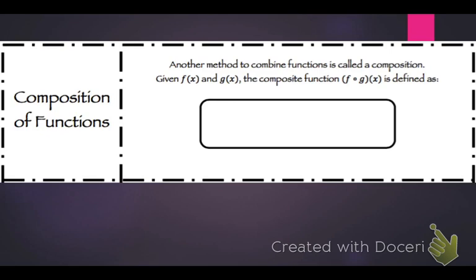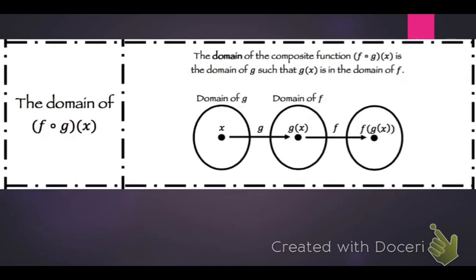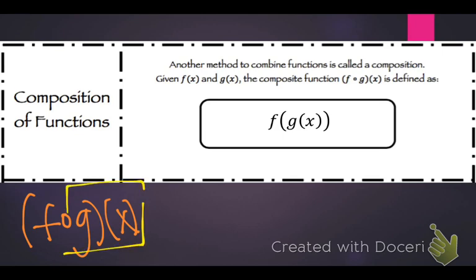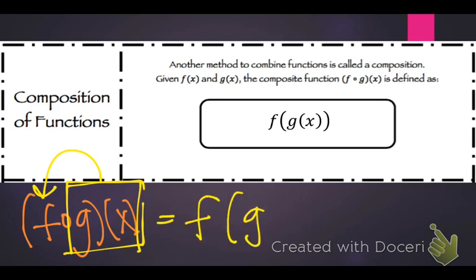Another method to combine functions is the composition of functions. This is written as f of g of x, also notated as f circle g of x. Whatever the inner function is, it is being plugged into the outer function — so g of x is being substituted into f.